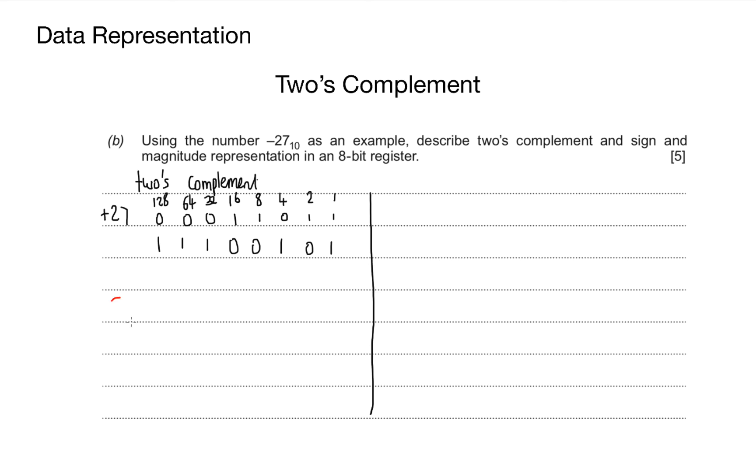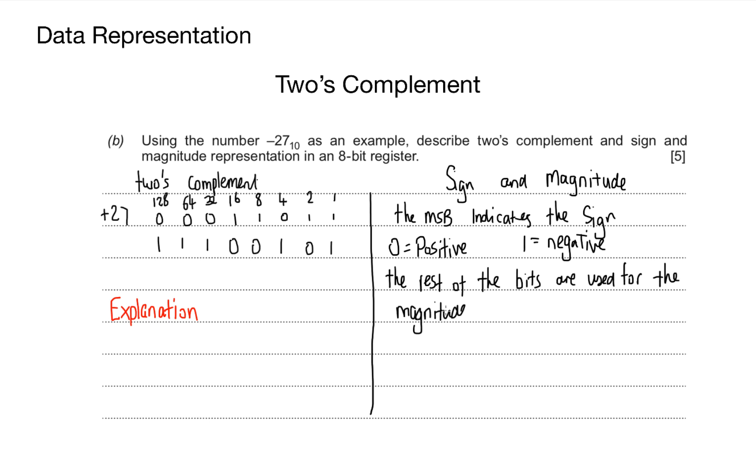For the sign and magnitude part, I'll recap because we did it in the last video. The most significant bit indicates the sign, being 0 for positive or 1 for negative. The rest of the bits are used for the magnitude, which is the value of the number. I do +27 in normal binary, then my sign bit becomes 1 to make it a negative number.